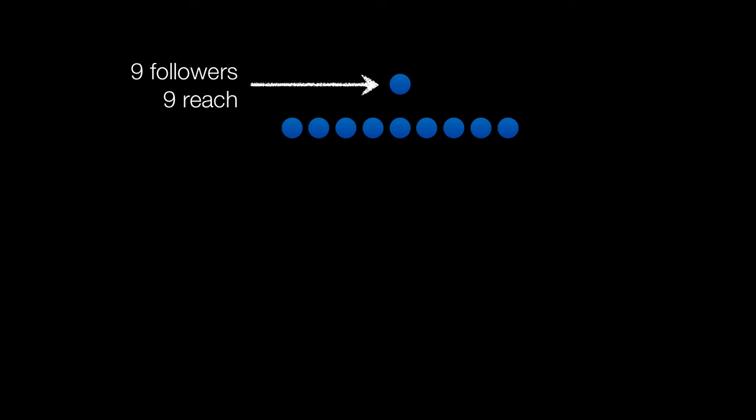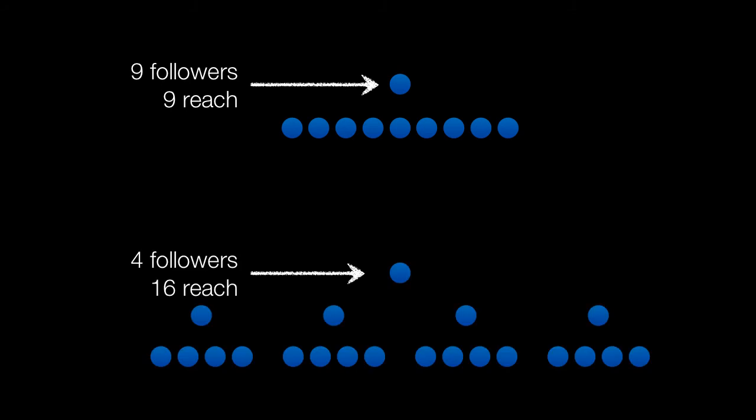Imagine, for example, if you have a person with nine followers. You might think that person has a downstream reach of nine people. And another person with only four followers, you'd think initially, only has a reach of four people.